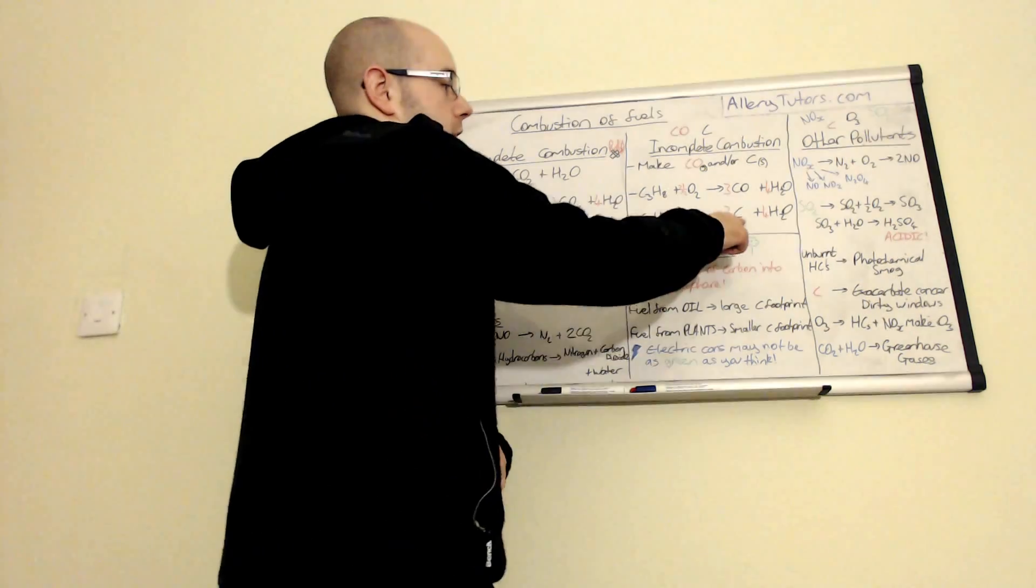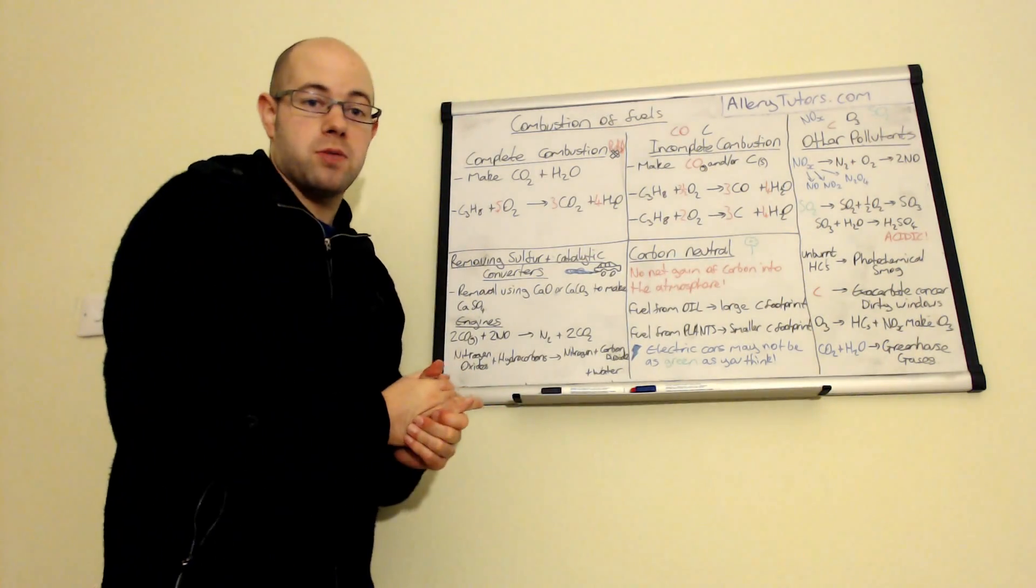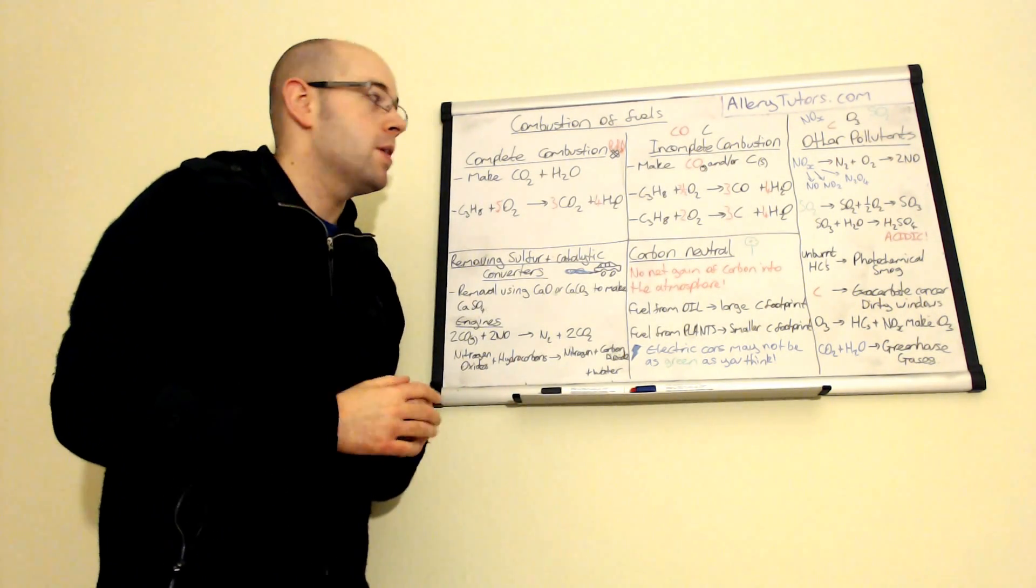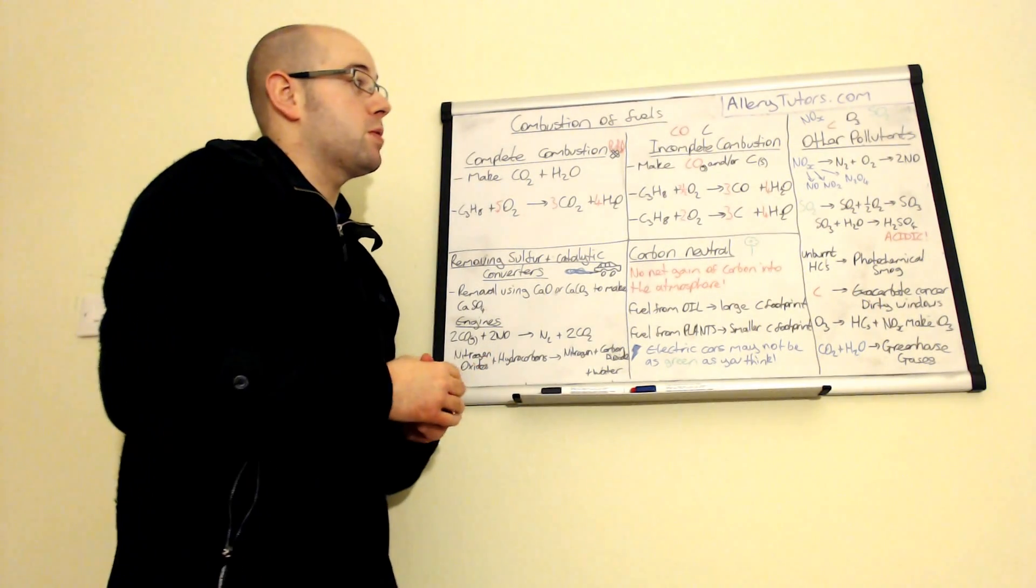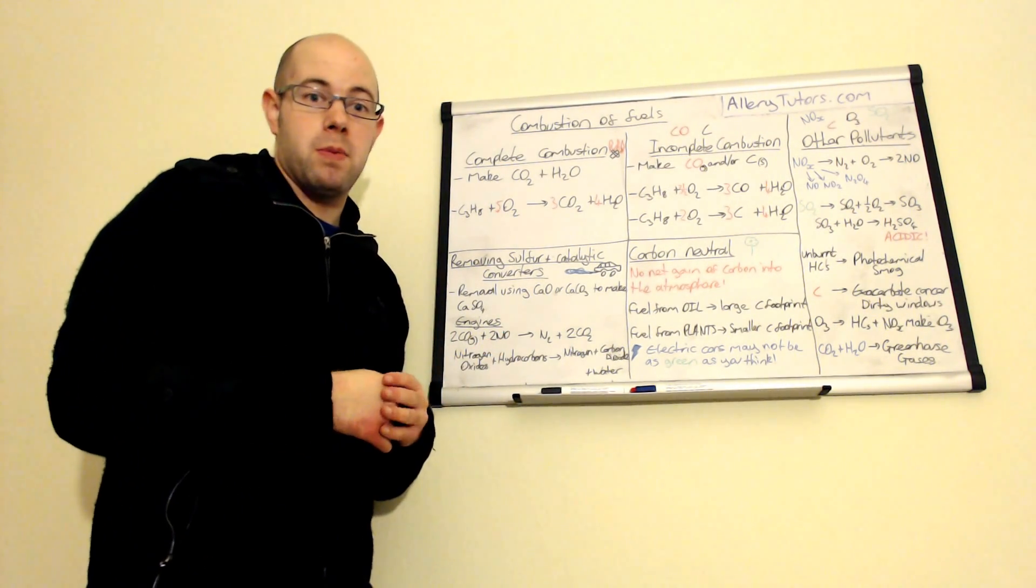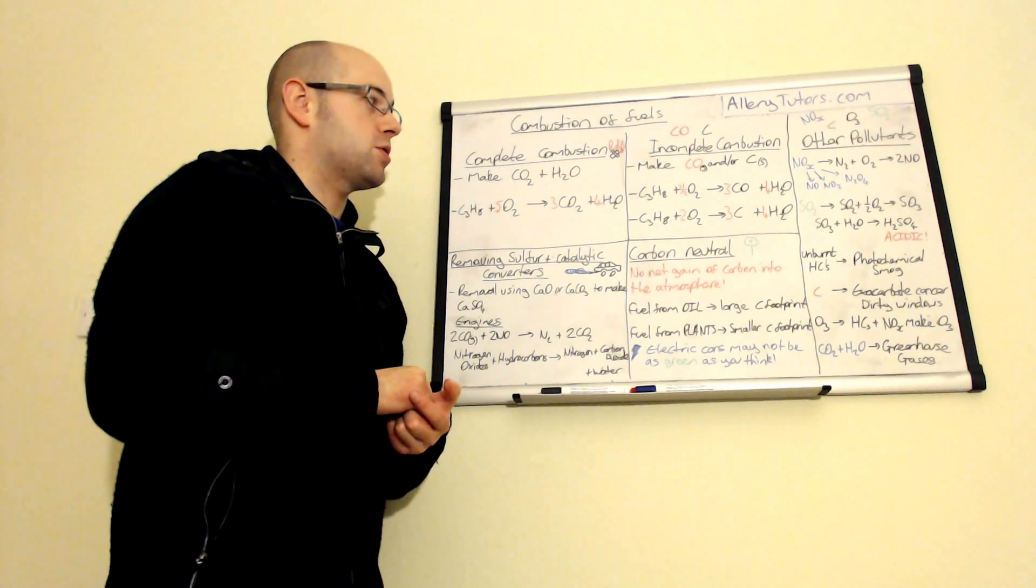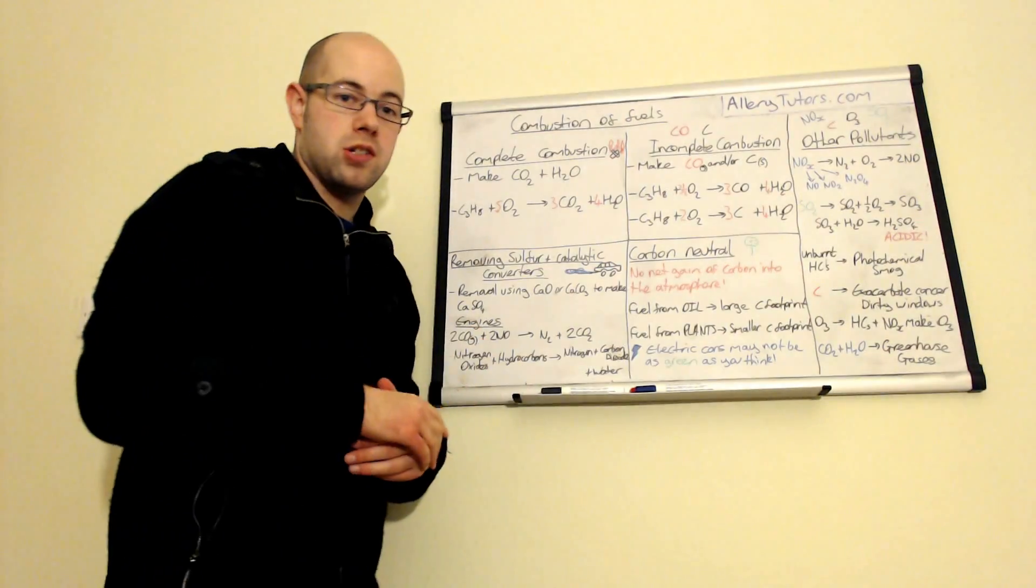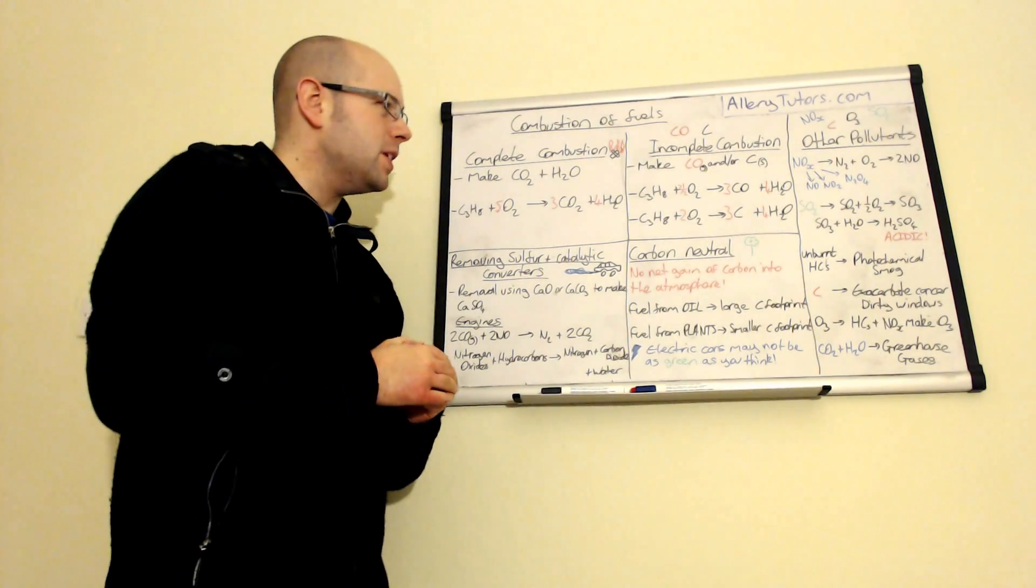And soot is obviously just carbon, just pure carbon. It's black, but we always produce water in both of these reactions as well. But you can see that both of these are actually not very nice, but they are existent when we burn any fuel. And it just depends on the level of oxygen. And obviously, the more oxygen you can get in there, the less carbon monoxide and soot you'll actually produce.